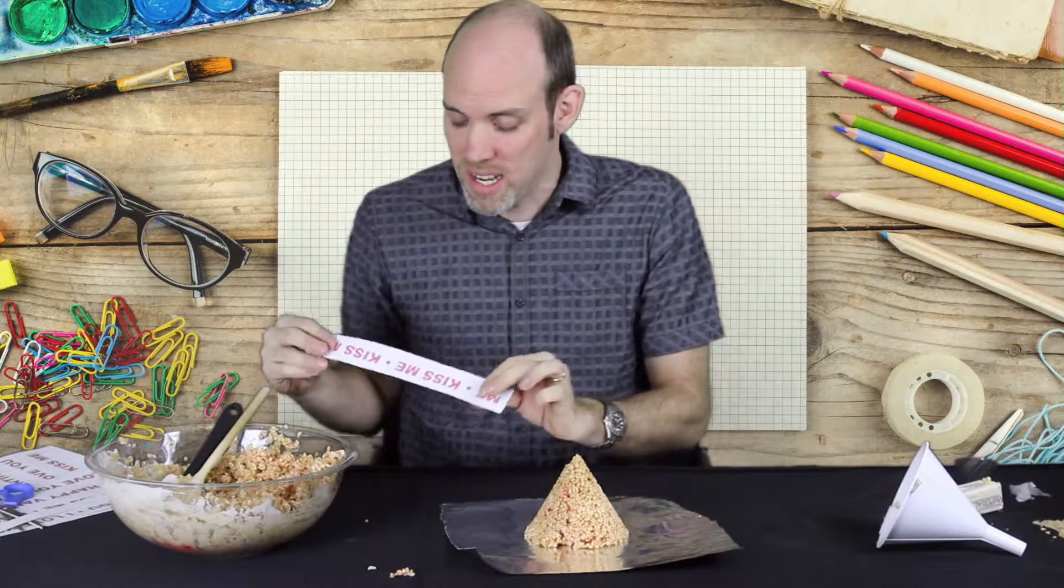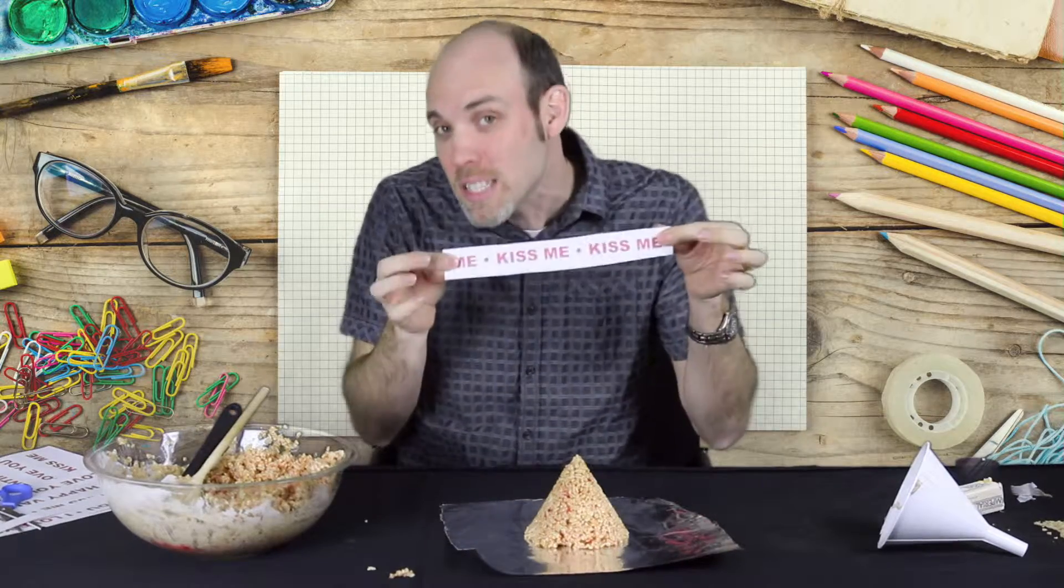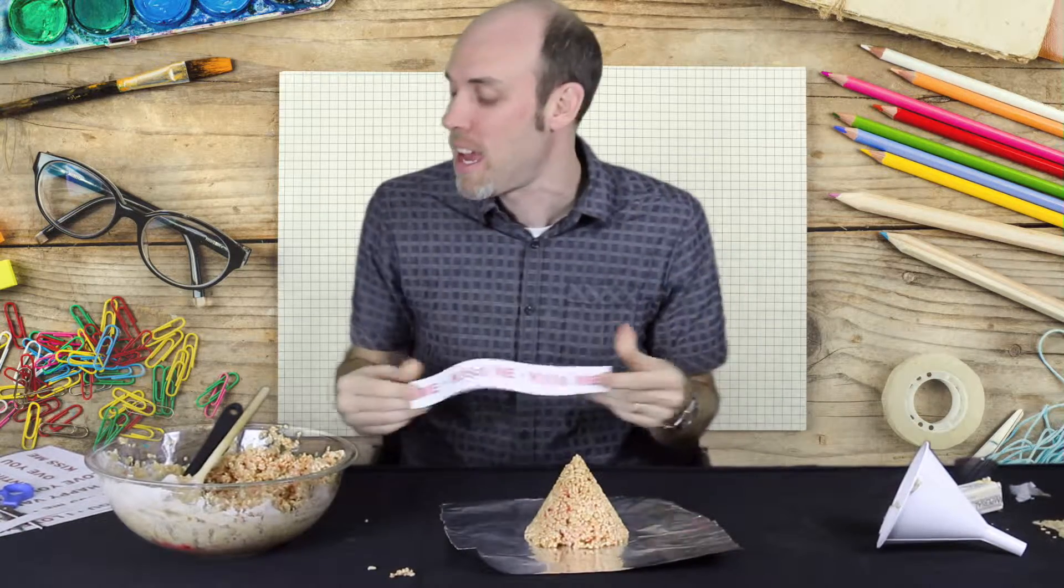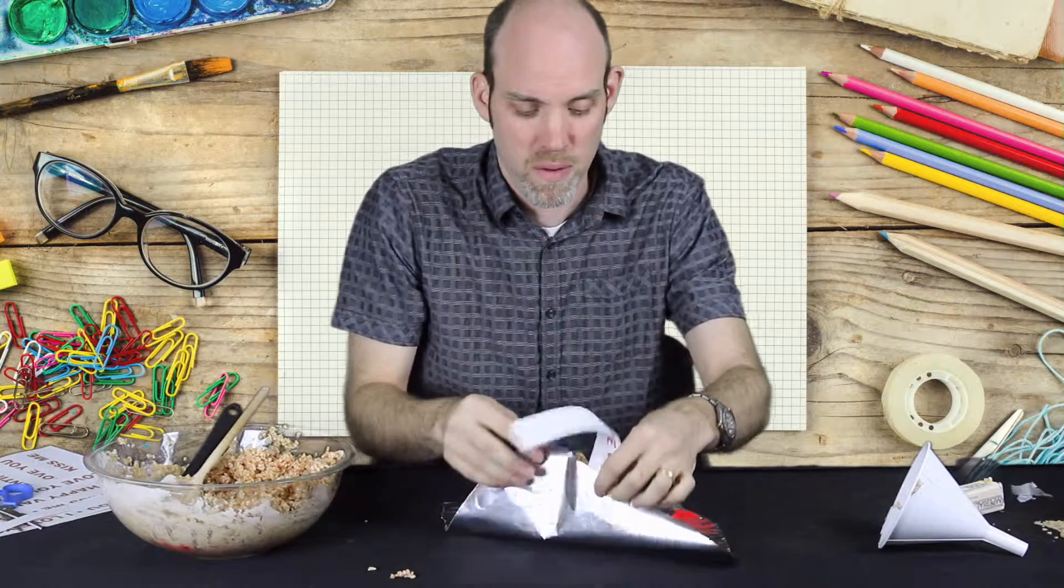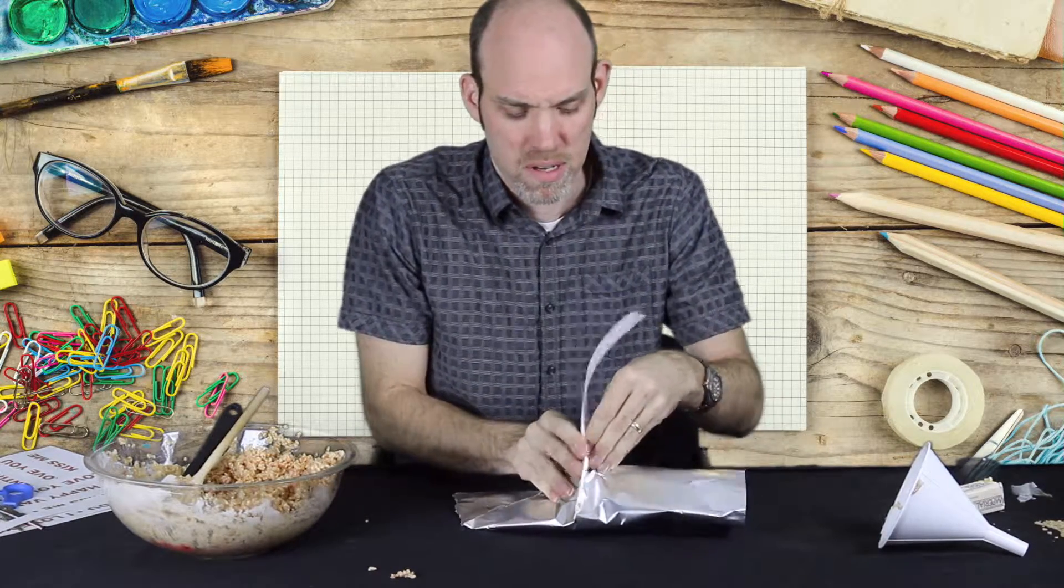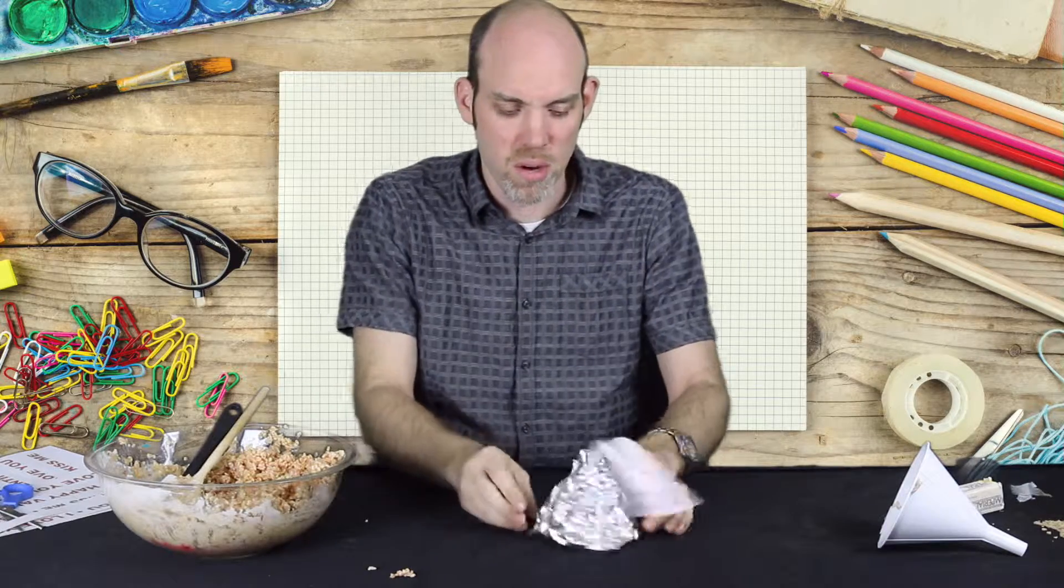You want to print out a sheet that says, oh I don't know, fun messages like kiss me or Valentine's Day or love you. Stick that in there. And when you fold this all up, the perfectionist in you can take a little extra time and there you go.